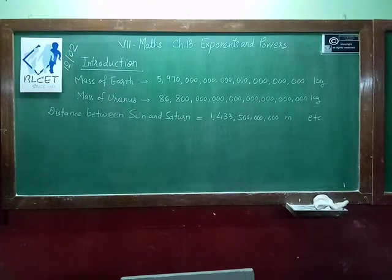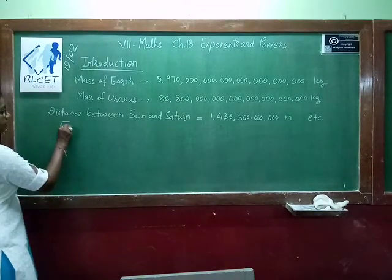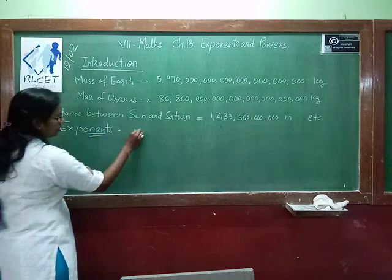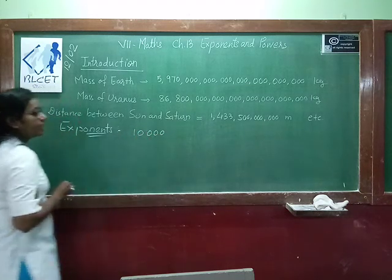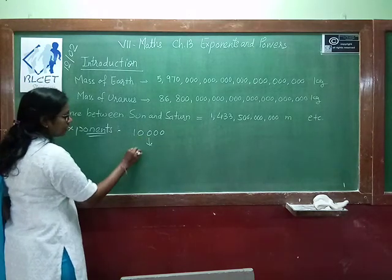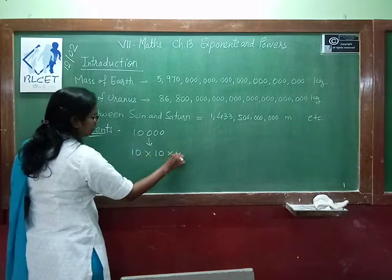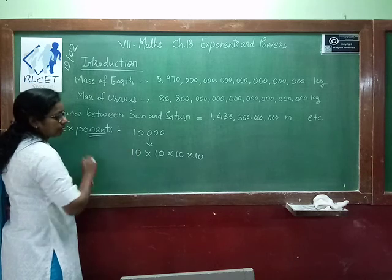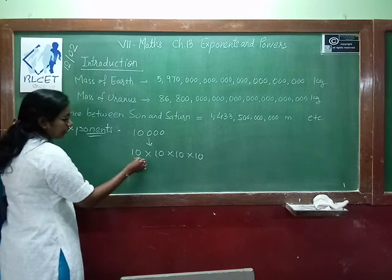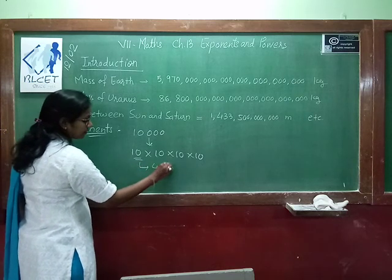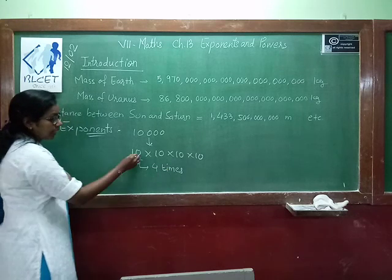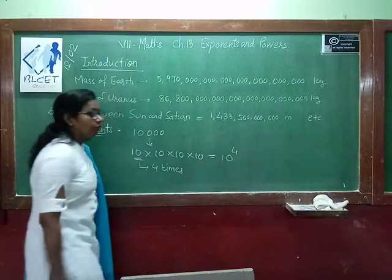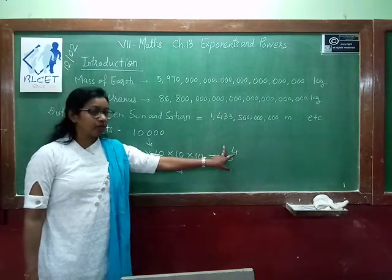One example is given for exponents. Suppose you have the number 10,000. How will you represent 10,000 in multiplication form? 10 into 10 into 10 into 10. So here 10 is repeated 4 times. This can be represented as 10 raised to the power 4.